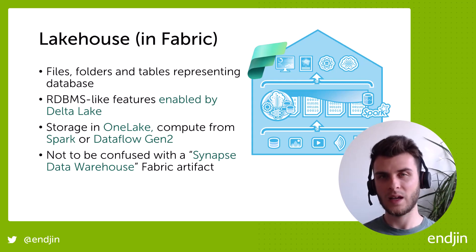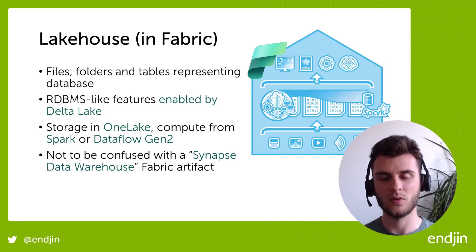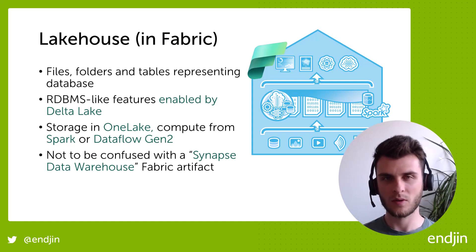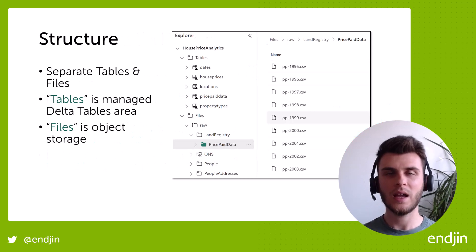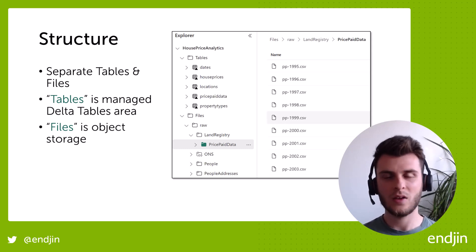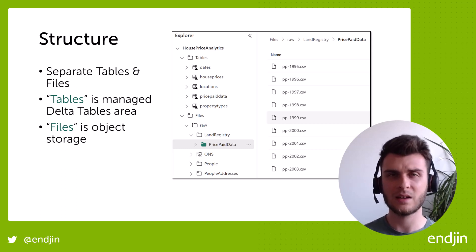Something to be wary of is if you write a table with Spark, you have to manage it through Spark in the lake house. If you write a table in a data warehouse through T-SQL, that can only be updated through T-SQL. But you can mix and match how you read from a table that's either been created from a data warehouse or from Spark in a lake house. The structure of a lake house has a file section and a table section. The tables section is where your Delta tables sit — anything you create from a Spark job, notebook, or Dataflow Gen 2. Whereas your files section is essentially just object storage where you can put raw files or reference files that don't necessarily need to be in tabular Delta Lake format, but you do want alongside your managed Delta tables.